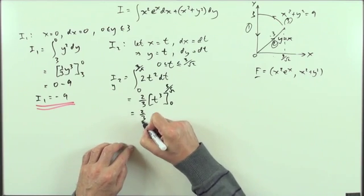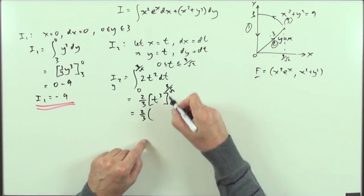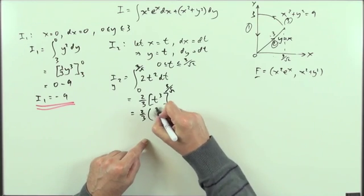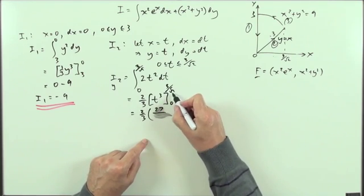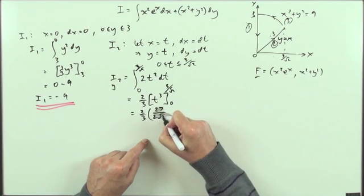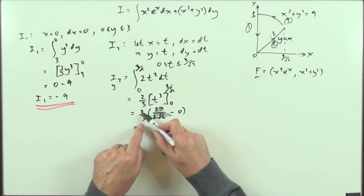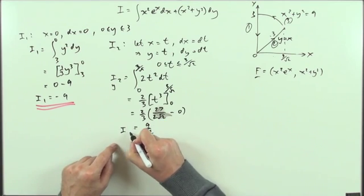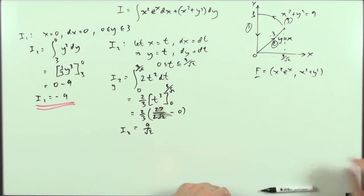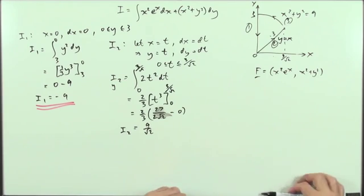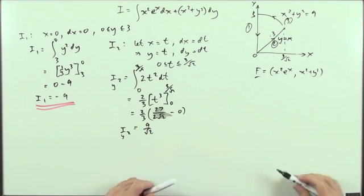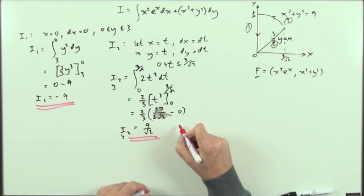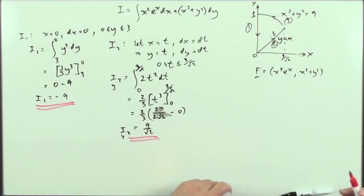So I've got two-thirds of — cubing three upon root two gives 27 over root two times root two times root two, so 27 over two root two. The twos cancel leaving nine upon root two. So the y-part of I2 is nine upon root two, plus some extra part from the x-component which I three will just take away.